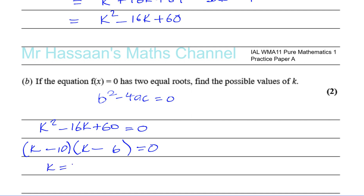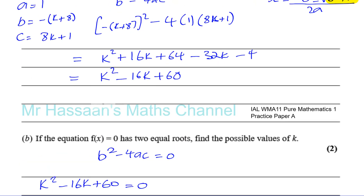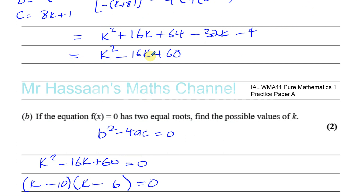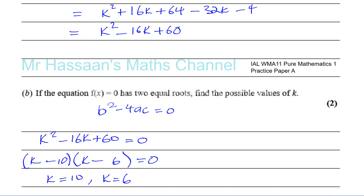When k equals 10, there will be only one solution. And when k equals 6, there will also be only one solution. That's part b done. Now part c.